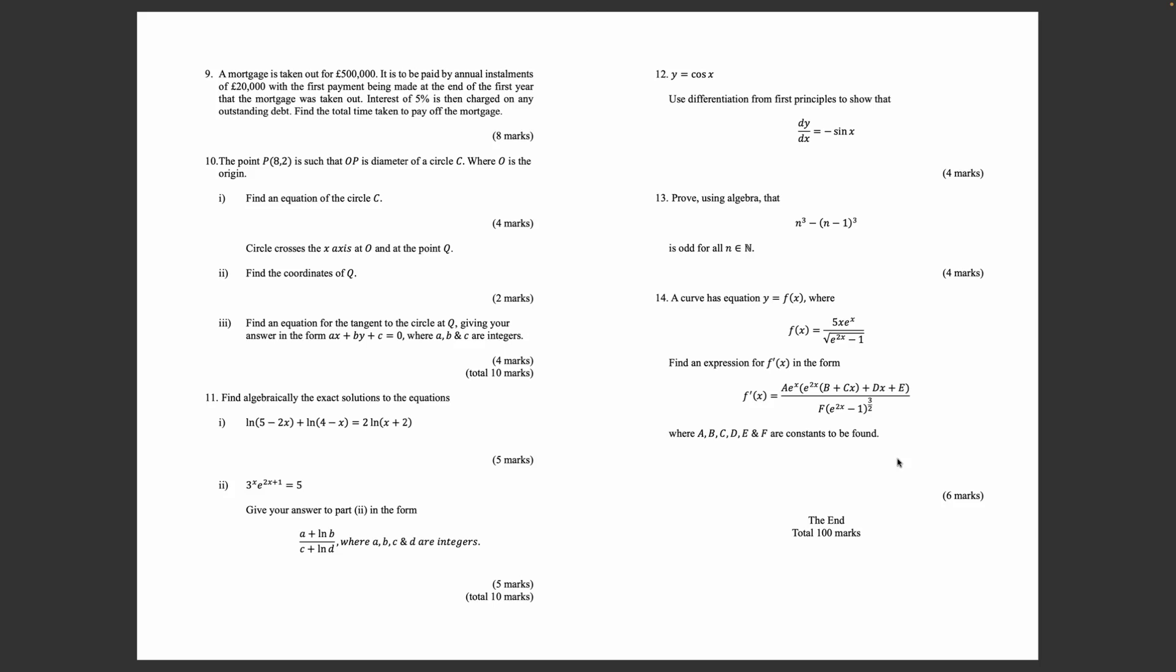Question 11: Find algebraically the exact solutions to the equations: ln(5 - 2x) + ln(4 - x) = 2ln(x + 2). Part 2: 3^x · e^(2x+1) = 5. Give your answer to part 2 in the form (a + ln b)/(c + ln d), where a, b, c, and d are integers to be found.